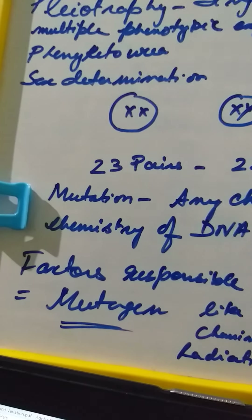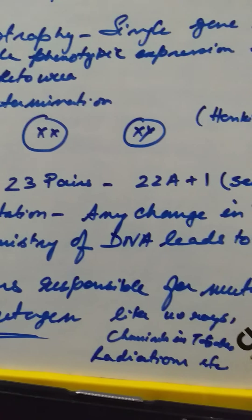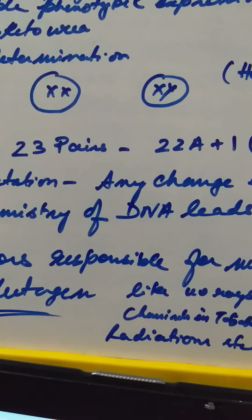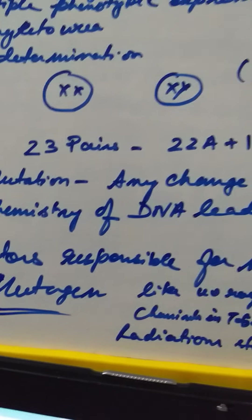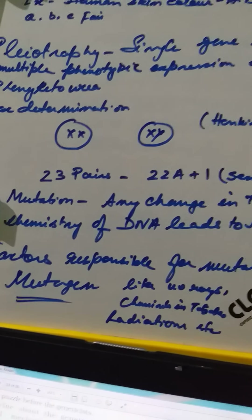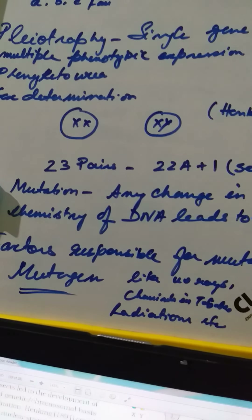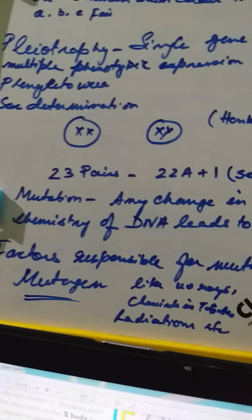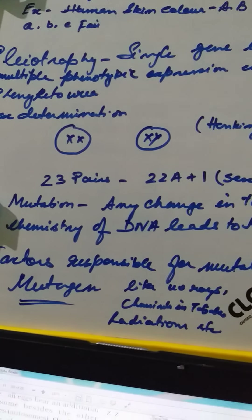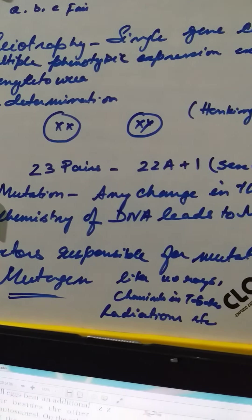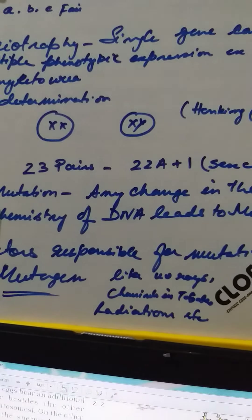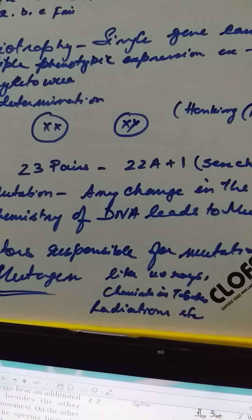In humans, we have 23 pairs of chromosomes, of which 22 are autosomes. Autosomes are genes responsible for body functions and are the same for every individual. Only one pair is responsible for sex determination. If it is XX, it is considered female, and if it is XY, that heterozygous condition is the male phenotype.